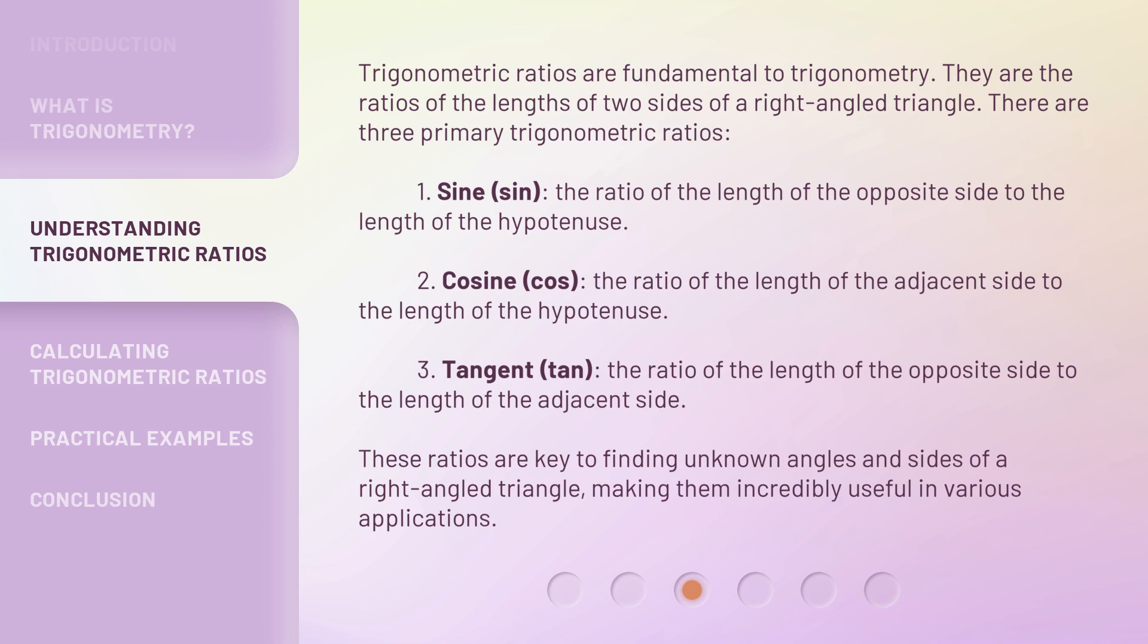3. Tangent (tan): the ratio of the length of the opposite side to the length of the adjacent side. These ratios are key to finding unknown angles and sides of a right-angled triangle, making them incredibly useful in various applications.